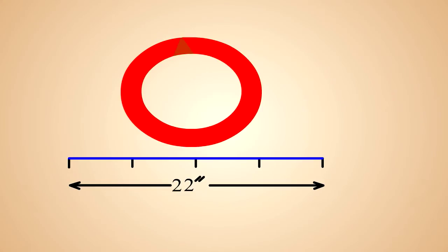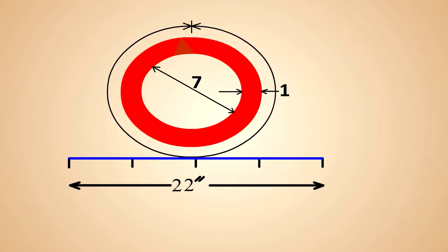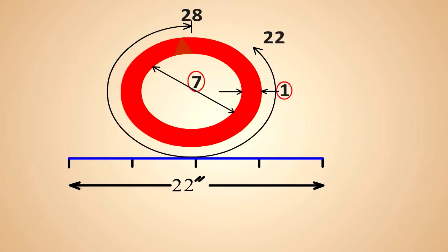In our case, with an inside diameter of seven inches and a thickness of one inch, we have a circumference of over 28 inches. The circumference of 22 inches cannot be achieved for a two-dimensional circle with a line one inch thick and a diameter of seven inches in two-dimensional space.